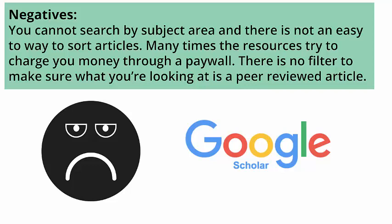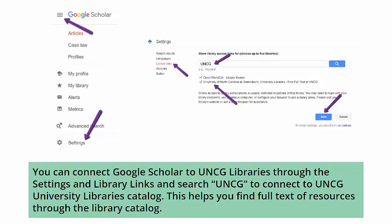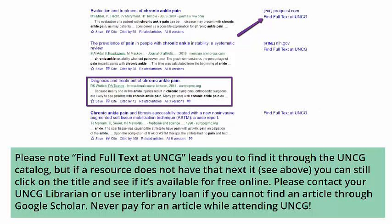There is no filter to make sure what you're looking at is a peer-reviewed article. You can connect Google Scholar to UNCG Libraries through the settings and library links, and search UNCG to connect to UNCG University Libraries catalog. This helps you find full text of resources through the library catalog. Please note that the 'Find Full Text UNCG' feature leads you to find the resource through the UNCG catalog, but if a resource does not have that next to it, such as with 'Diagnosis and Treatment of Chronic Ankle Pain,' you can still click on the title of the resource and see if it's available for free online. Please contact your UNCG librarian or use interlibrary loan if you cannot find an article through Google Scholar.